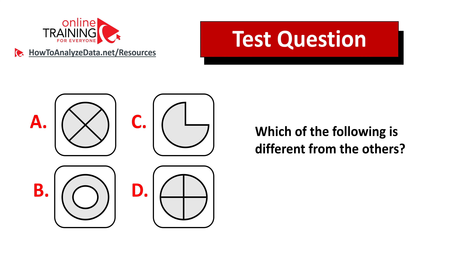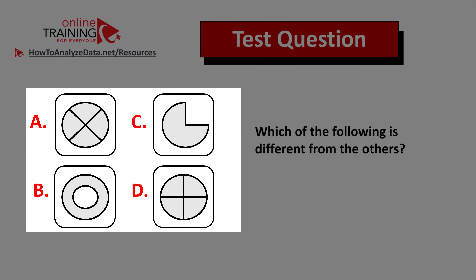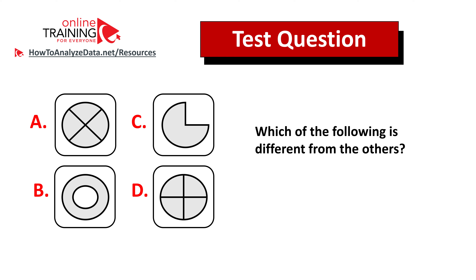Here's a question from the real test you can try to solve on your own. Which of the following is different from the other shapes? You're presented with four different rounded squares, each one with a shape inside. Always look for patterns. Give yourself 10 to 15 seconds to see if you can come up with the answer. If you've figured it out, feel free to post the answer and your rationale in the comment section. Thanks for participating and good luck solving this challenge.